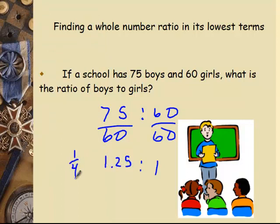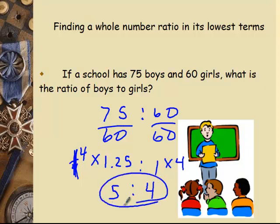So a 1 to 1.25 ratio. I recognize that. That's 0.25 the same as 1.25. So if I multiply this one times 4, I'm going to get a whole number. 4 times 1.25 is 5, and 1 times 4 is 4. So there's how we end up with that one.